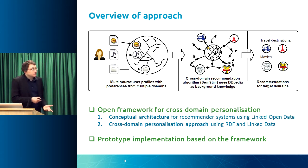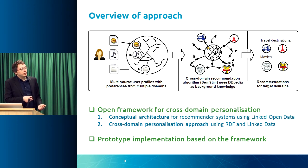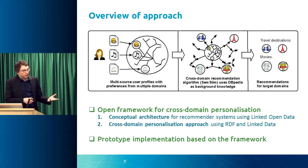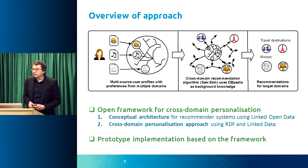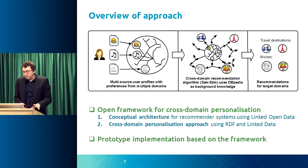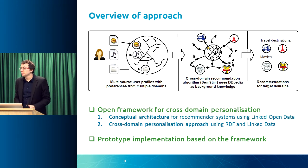In a nutshell, the personalization approach works like this: you have user preferences expressed using DBpedia URIs, and then an algorithm uses those preferences to find items from other target domains such as travel destinations or movies, and recommends those to the user. After presenting these two contributions, I'll tie them together by talking about the prototype implementation that shows how this has been implemented for a real-world industrial use case.